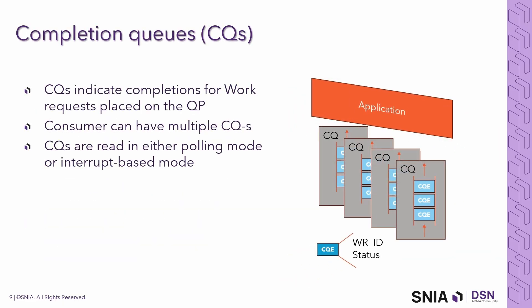Completion queues are a way for the RNIC to let the RDMA application know when a work request is completed. Similar to Queue Pairs, an application can have several CQs. The application can read from the completion queue either in polling mode, or request an interrupt to be generated by the RNIC when a new completion arrives.